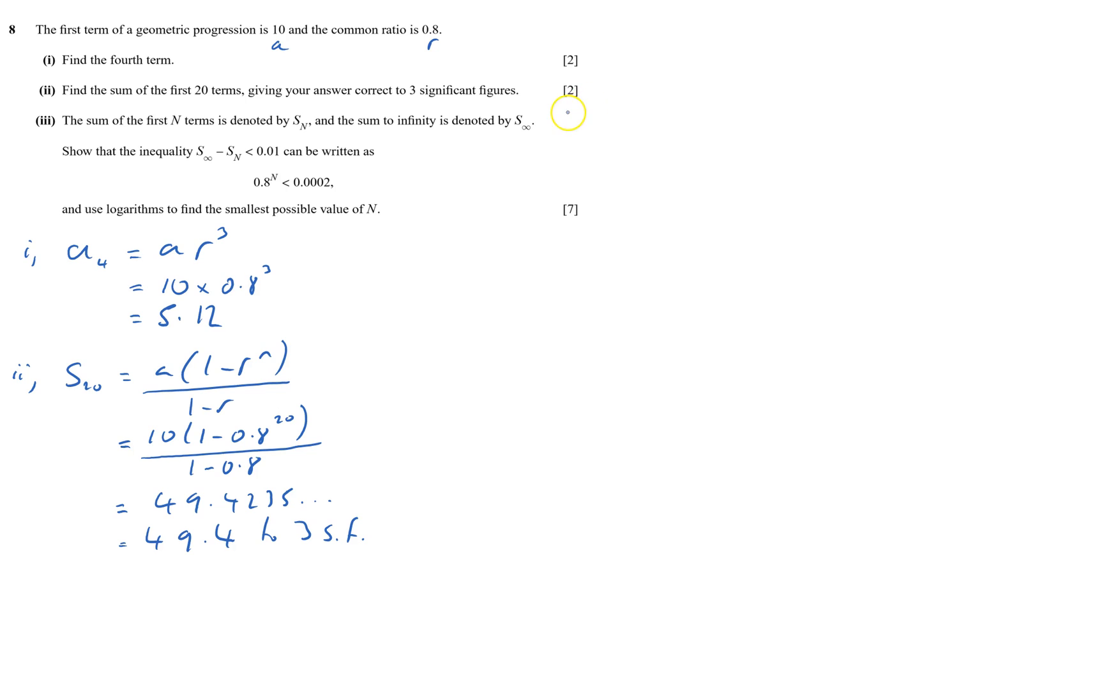I've got 4 marks, now I've got this bit to show that sum to infinity minus sum of n is less than 0.01. So I've got to know sum to infinity, what's in the formula sheet, is 10 over 1 minus 0.8, and sum to n is 10 times 1 minus 0.8 to the power of n over 1 minus 0.8, and subtract those, and it's got to be less than 0.01.